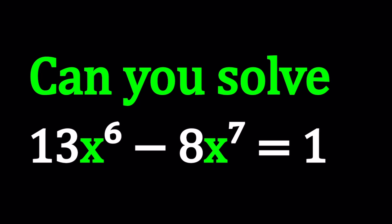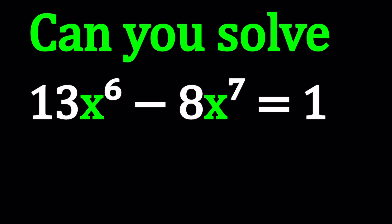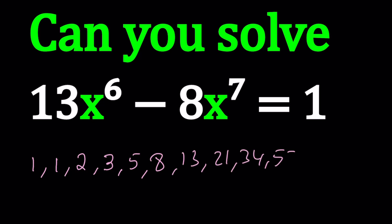Have you seen those before? Let me give you some background. I'm going to write a sequence formed by adding two consecutive terms, starting with 1, 1. To get the third term, 1 plus 1 equals 2. Then looking at the last two terms: 1 plus 2 is 3, then 5, 8, 13, 21, 34, 55, 89 — and so on forever.